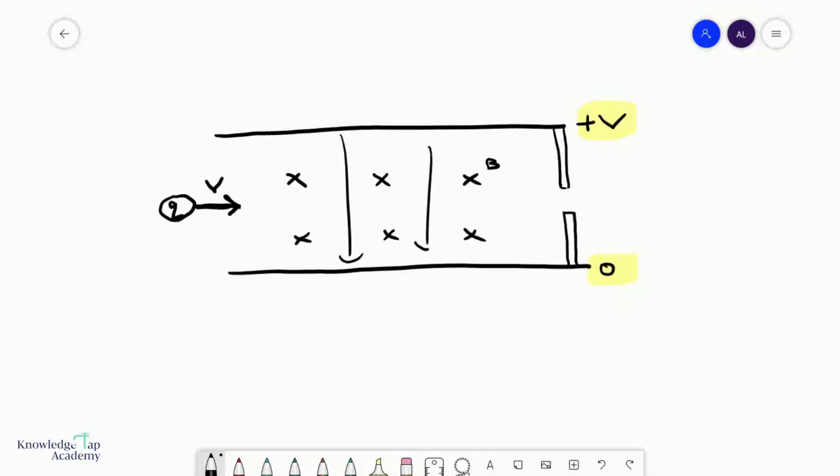And I have a magnetic field that is going into the plane of this screen over here. So I have two perpendicular fields. Let's call this E, the electric field strength, and B, the magnetic flux density of these fields.